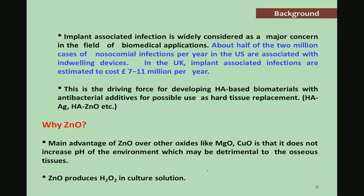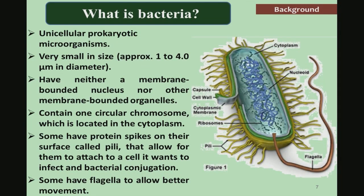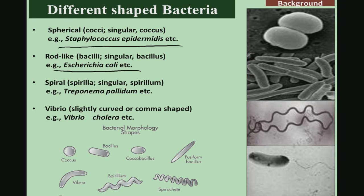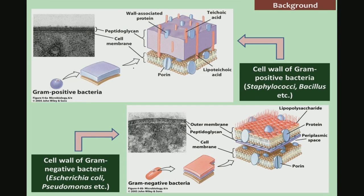Zinc oxide, like MgO and CaO, increases the pH of the environment, which may be detrimental for osseous tissues, and it can produce H2O2 in culture conditions. To recall: bacteria are unicellular prokaryotic microorganisms, very small in size — about 1 to 4 microns in diameter. The most pathogenic bacteria causing prosthetic infection is Staphylococcus, including Staphylococcus epidermidis. The most widely investigated bacterium in the context of biomaterials is Escherichia coli.